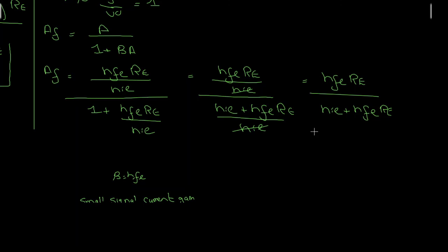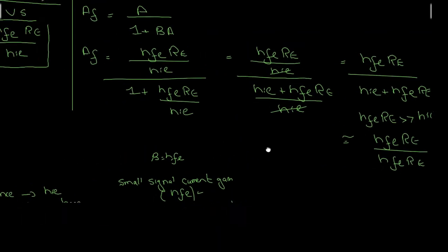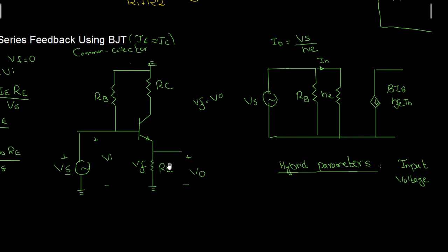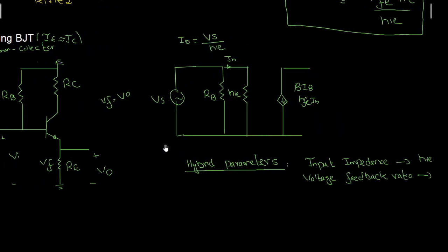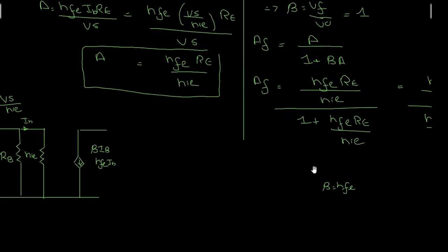Normally HFE·Re is very much greater than HIE, the input resistance of the transistor. So the gain with feedback is approximately equal to HFE·Re divided by HFE·Re, which is approximately equal to 1. That is why it is called the emitter follower — the output at the emitter is almost equal to the input voltage and is also in phase. We need to remember the hybrid parameters HIE and the small signal current gain beta equal to HFE.